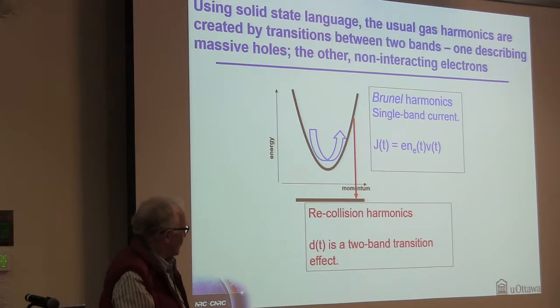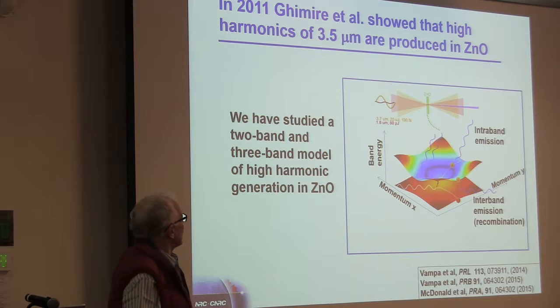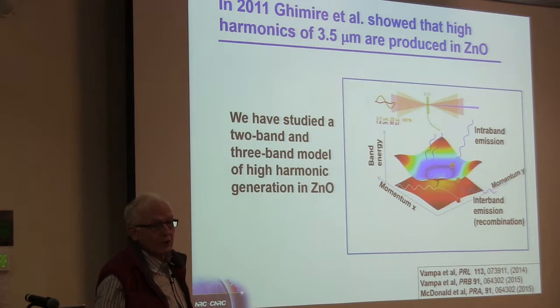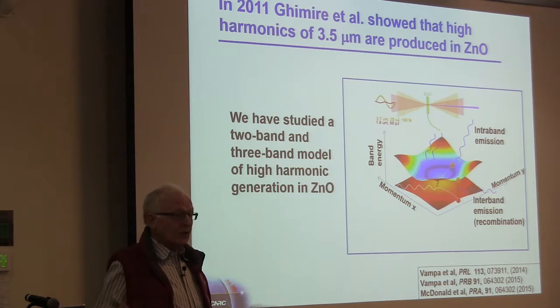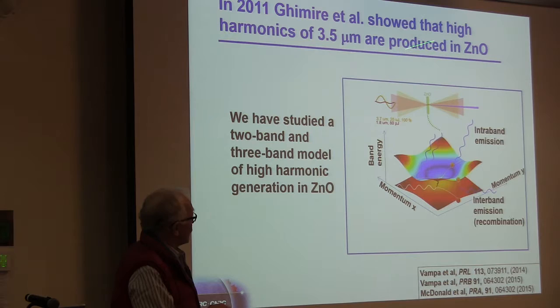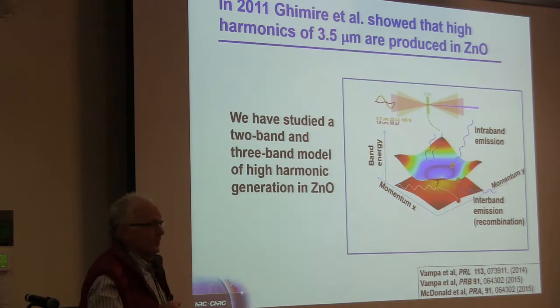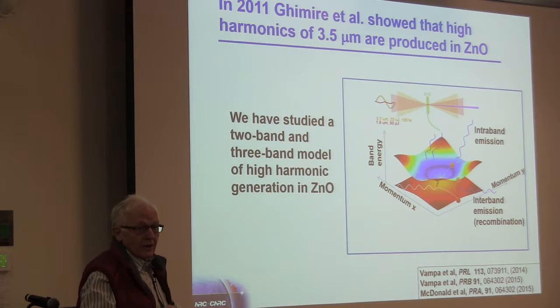So in 2011, Ghimire and all, that's Shambhu Ghimire, you may know him, he's partly from the community of high harmonics. He was working with David Reis, and David Reis and Shambhu Ghimire in Luda Moro's lab did an experiment looking at 3.5 micron light interacting with zinc oxide. Zinc oxide is a large band gap semiconductor, 3.5 eV band gap, and they found high harmonics that are generated, harmonics up to harmonic number 29 of 3.5 micron light. It was an amazing result. As I said, I was very surprised. And so we decided, after a long delay, to take a look at it and try to work on it.